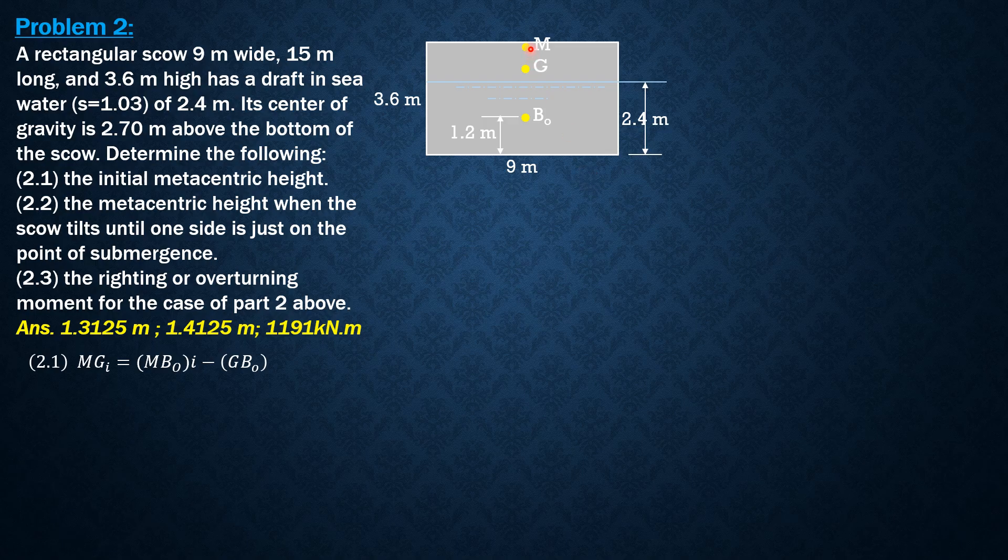Let's assume that the metacenter is to be above so that the scow is stable. This is 2.7, so GB₀ is 2.7 minus 1.2, so 1.5 meters. The initial metacentric height for a rectangular parallelepiped is